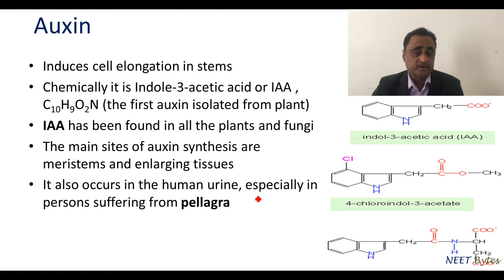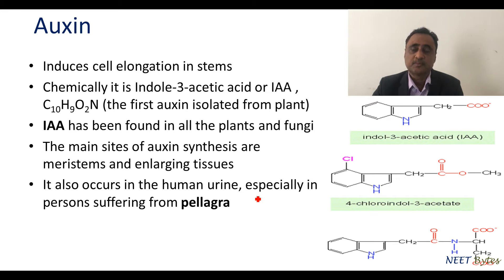Variants of indole-3-acetic acid include 4-chloroindole-3-acetate and indole-acetylaspartic acid. Indole-3-acetic acid is found in all plants and fungi, and the main site of synthesis is the meristematic tissues. It also occurs in human urine, especially among those suffering from the disease called pellagra.